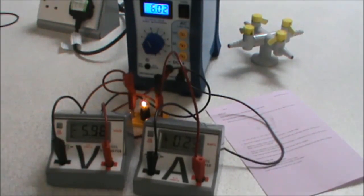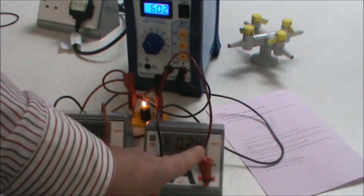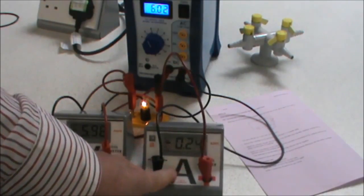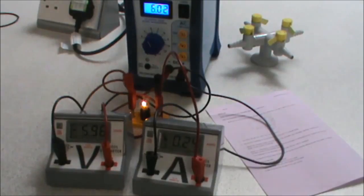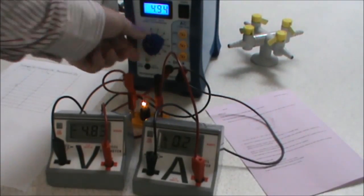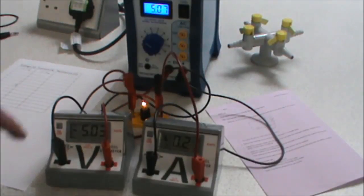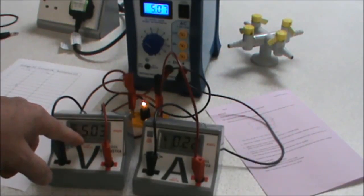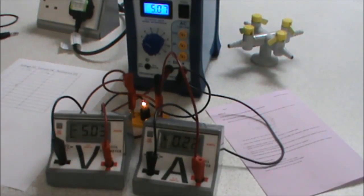So here I can see that my voltage is minus 5.98 and I've got a current of minus 0.24. So now I change the voltage to minus 5. I can see I've got minus 5.03 and minus 0.22.